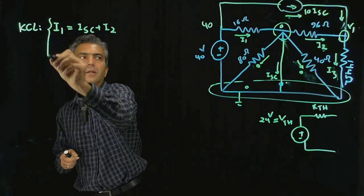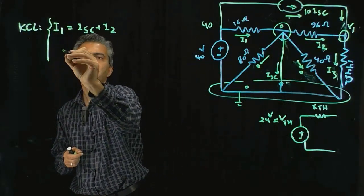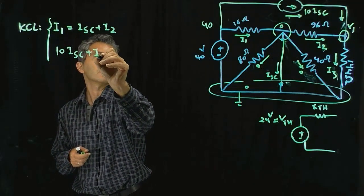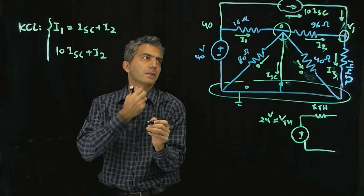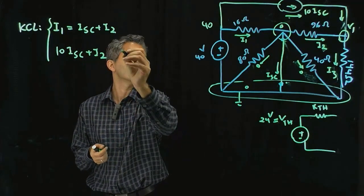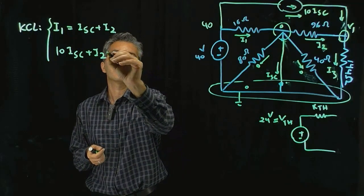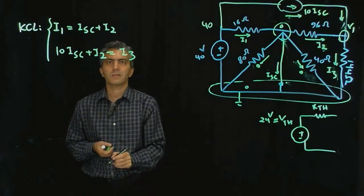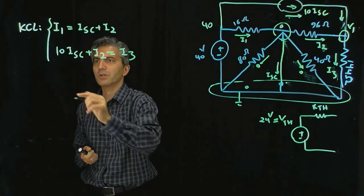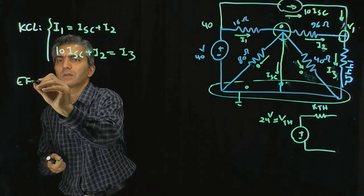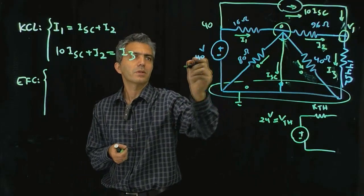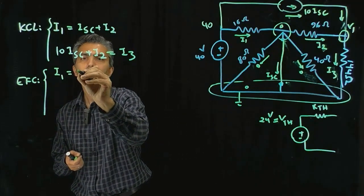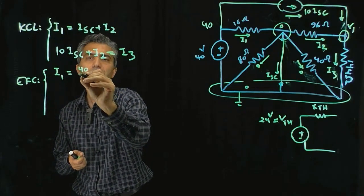For that node right there, we have 10 times I short circuit going in, and I2 is going in, and I3 is going out. That's my KCL and equations for components. This one, I1 is equal to 40 minus 0 divided by 16.